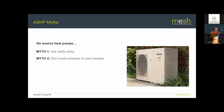Myth two: air source heat pumps don't work properly in cold weather. It's true that output drops with ambient temperature, but if you size the heat pump correctly it will provide the heat required throughout the year. Most air source heat pumps are designed to work down to around minus 25°C, which is absolutely fine for anywhere in the UK. In northern Scandinavia with very harsh conditions, you might consider some backup heating — which is why ground source is more common there.